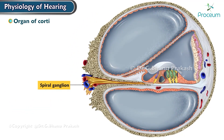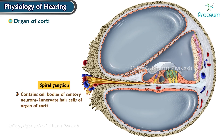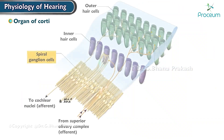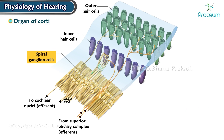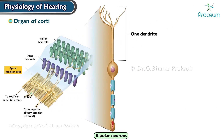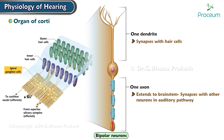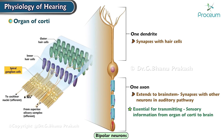The spiral ganglion contains the cell bodies of the sensory neurons that innervate the hair cells of the organ of Corti. These sensory neurons, known as spiral ganglion neurons, form synapses with the hair cells and transmit the electrical signals generated by the hair cells to the brain. The spiral ganglion neurons are bipolar neurons with one dendrite that synapses with the hair cells and one axon that extends to the brain stem, where it synapses with other neurons in the auditory pathway. They are essential for transmitting sensory information from the organ of Corti to the brain, where it is processed and interpreted as sound.